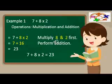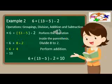For example two, simplify 6 plus (13 minus 5) divided by 2. In this example, the operations involved are groupings, division, addition, and subtraction.